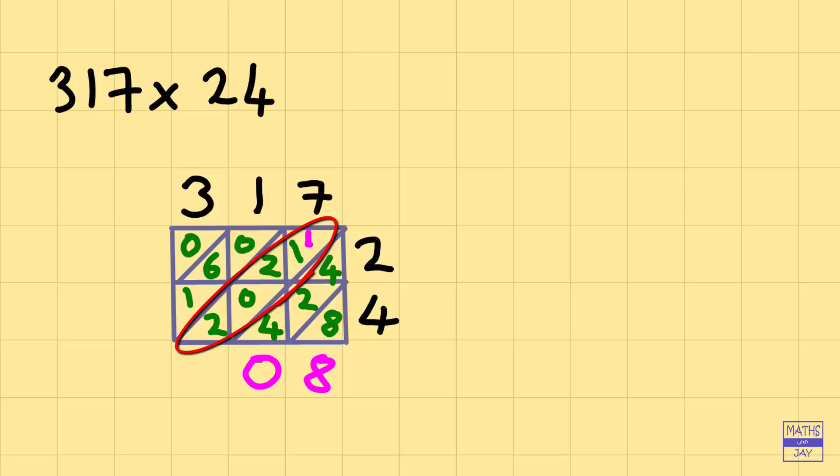And then adding up the number that we've just carried to all the other numbers in that diagonal. We've got 1 and 1 is 2, plus 2 is 4, plus 0 is still 4, plus 2 is 6. So that's our total for that diagonal. Nothing to carry this time.